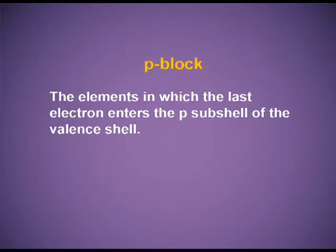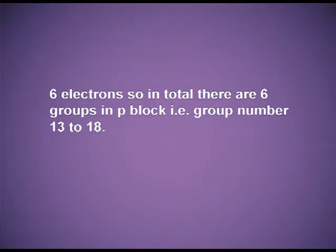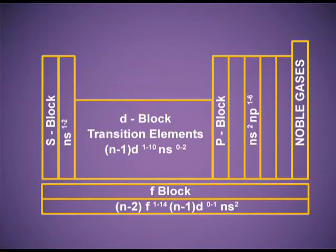For the P block, the elements are those in which the last electron enters the P subshell of their valence shell. The P orbital can accommodate six electrons, so in total there are six groups in the P block, from group number 13 to 18. The electronic configuration of P block elements is nS2, nP1 to 6. The S block and the P block together are known as the main block elements or the representative elements.